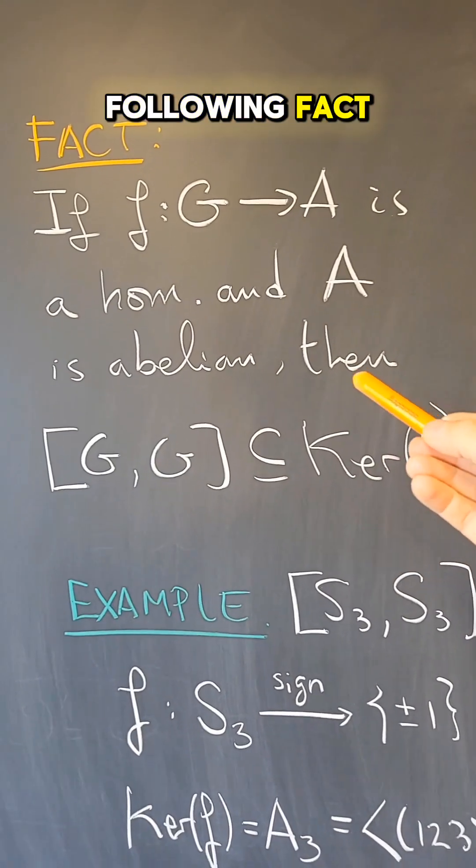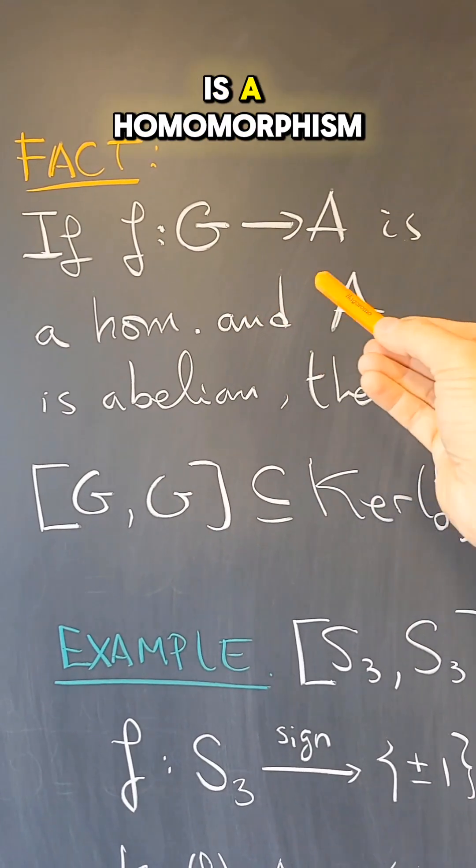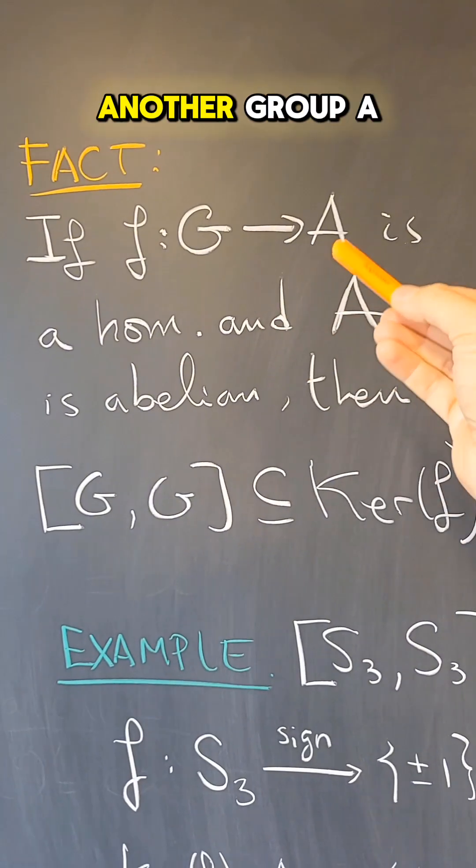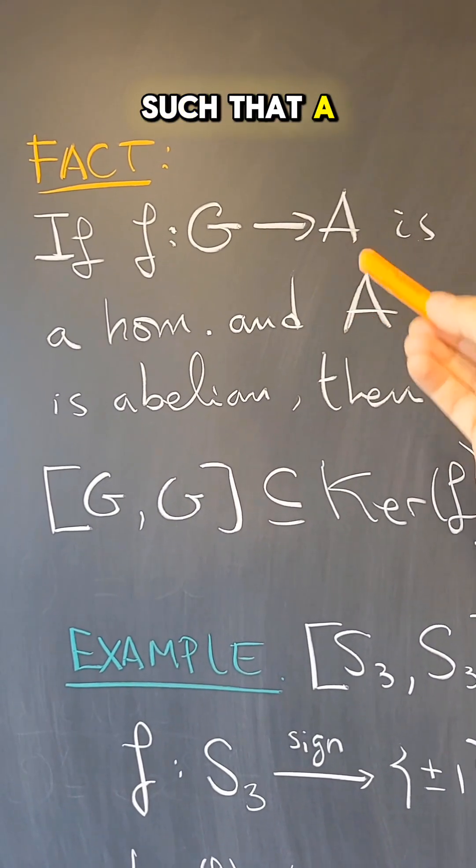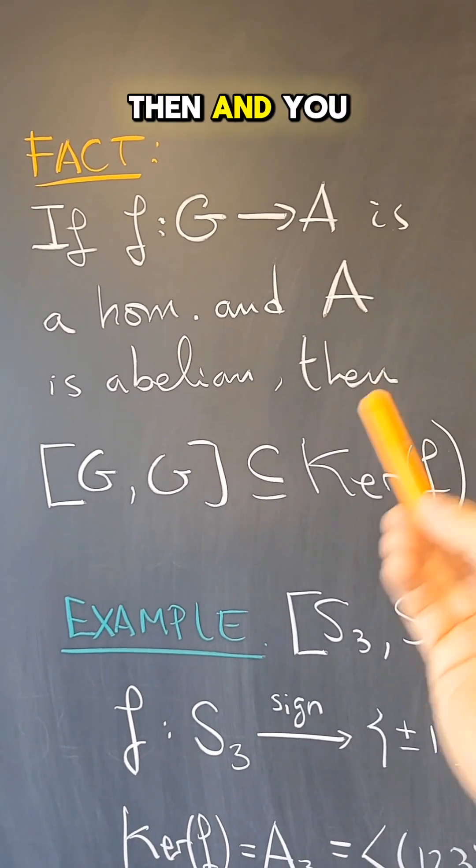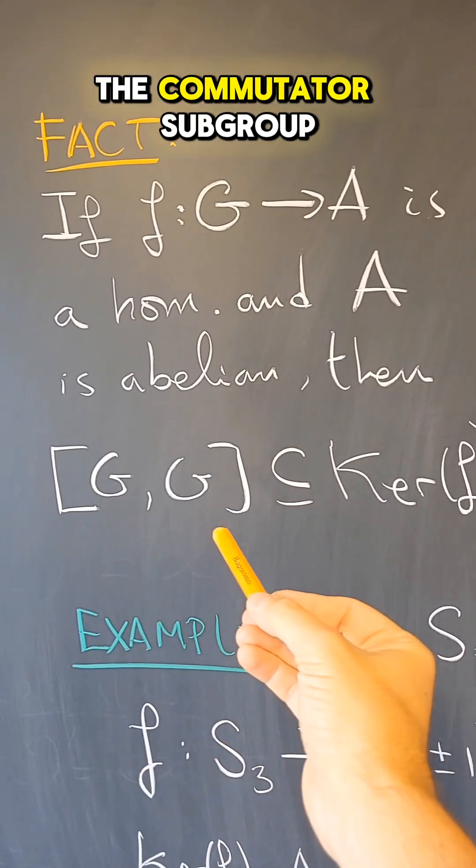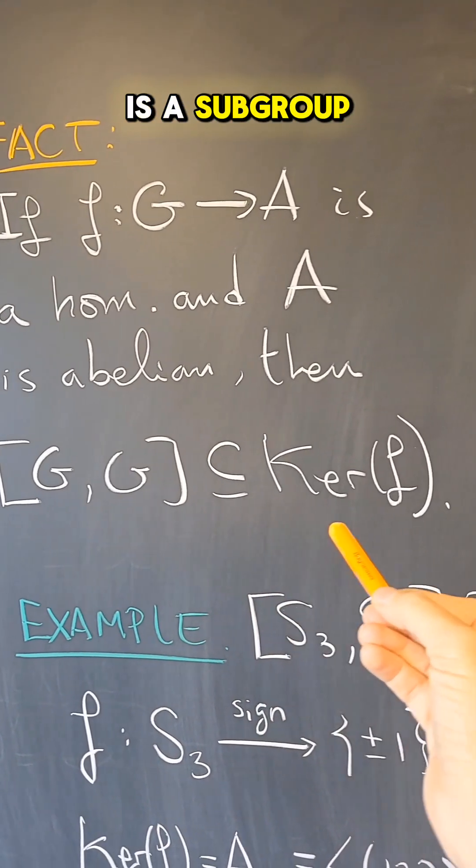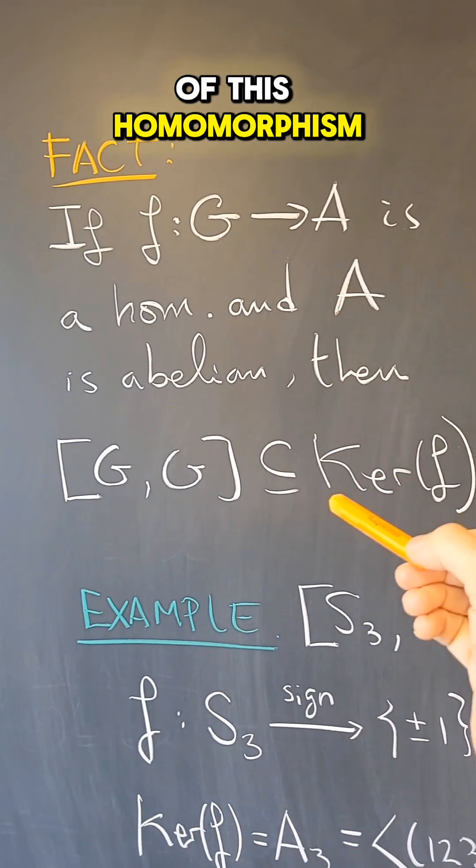So how do we actually do it? We use the following fact. Suppose that F is a homomorphism from G to another group A such that A is an abelian group. Then, and you should prove this, the commutator subgroup is a subgroup of the kernel of this homomorphism.